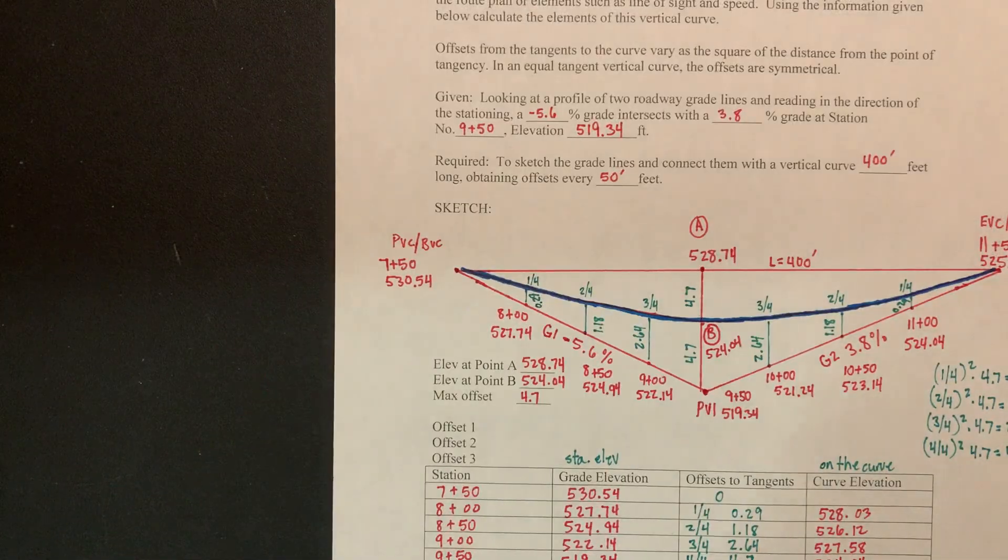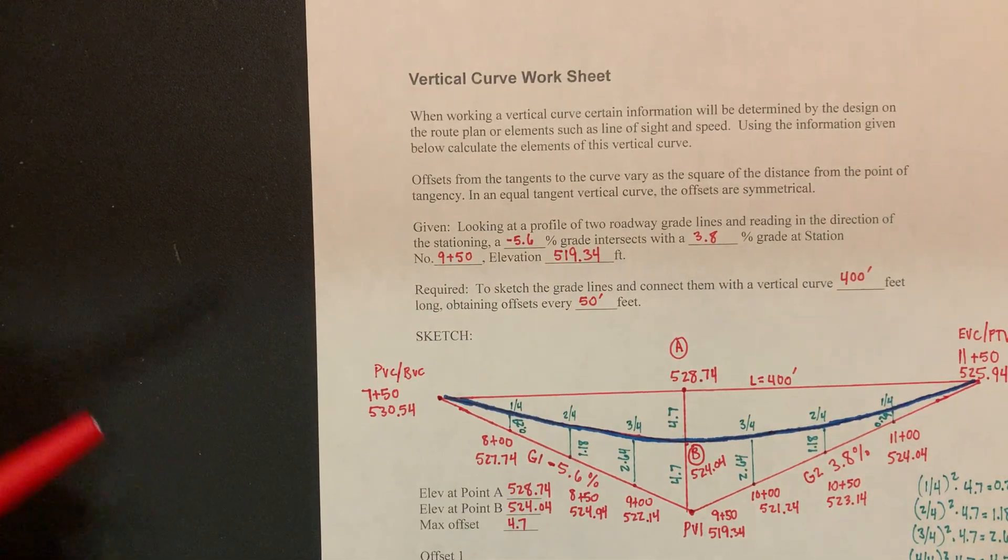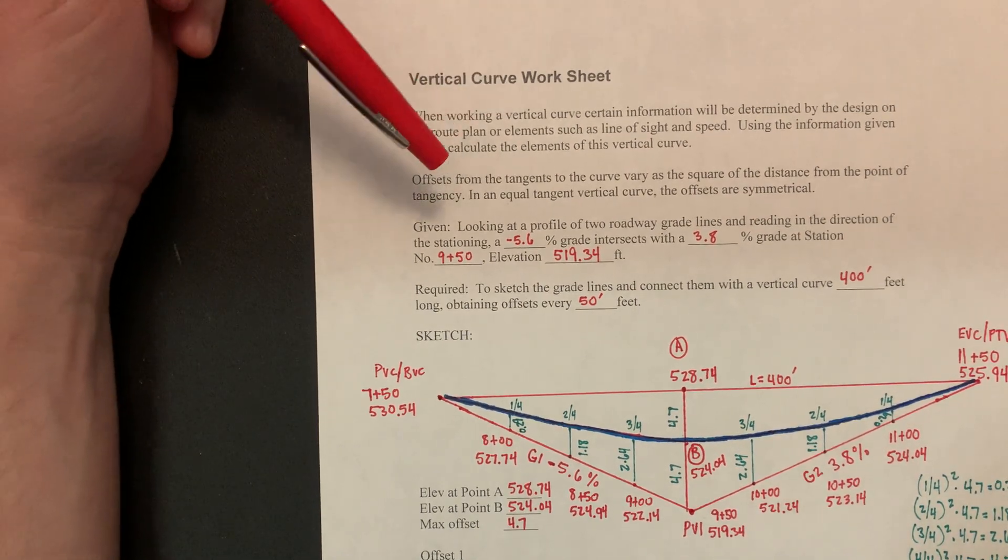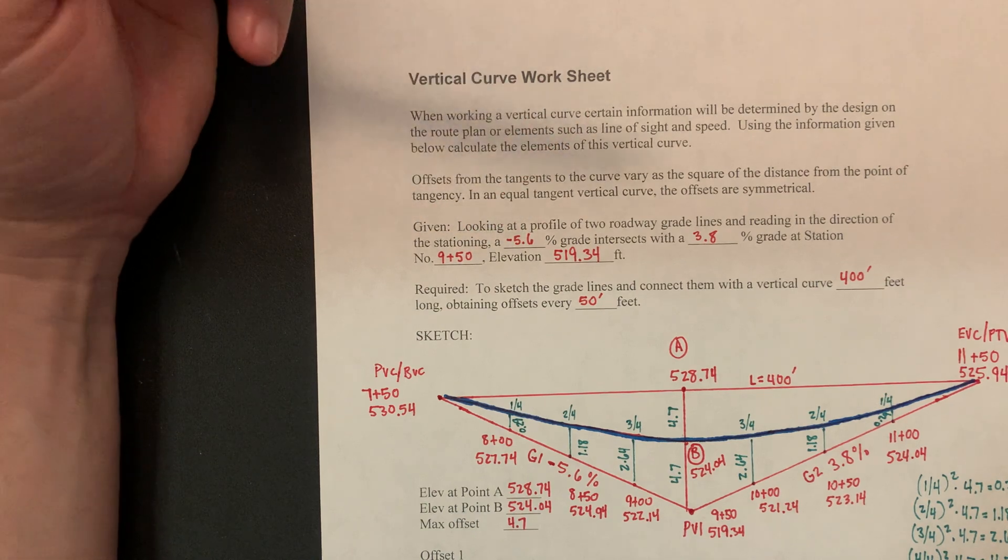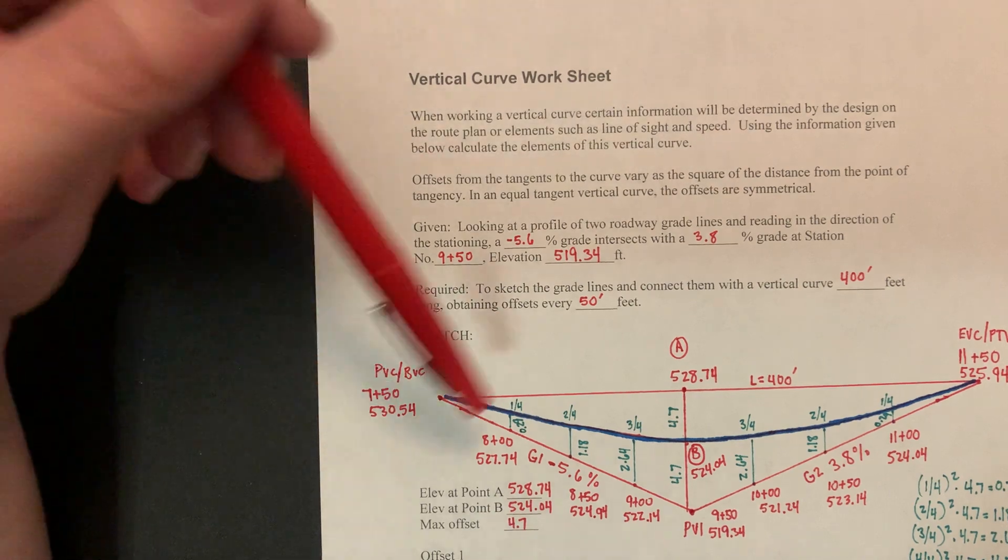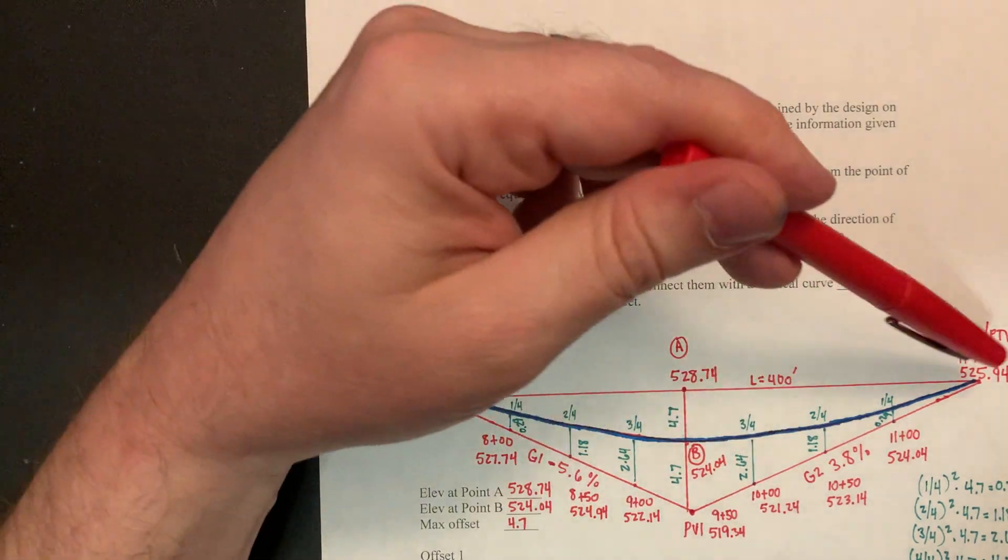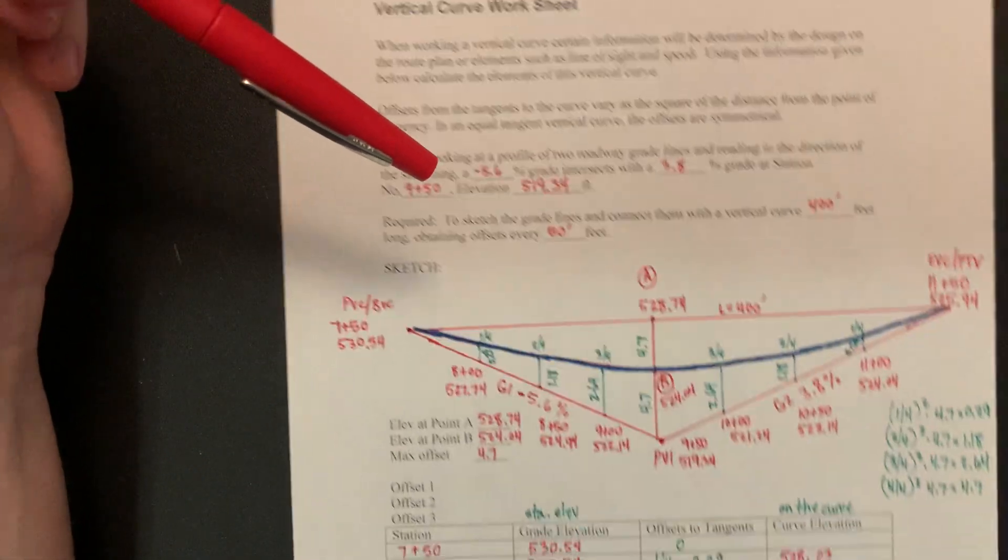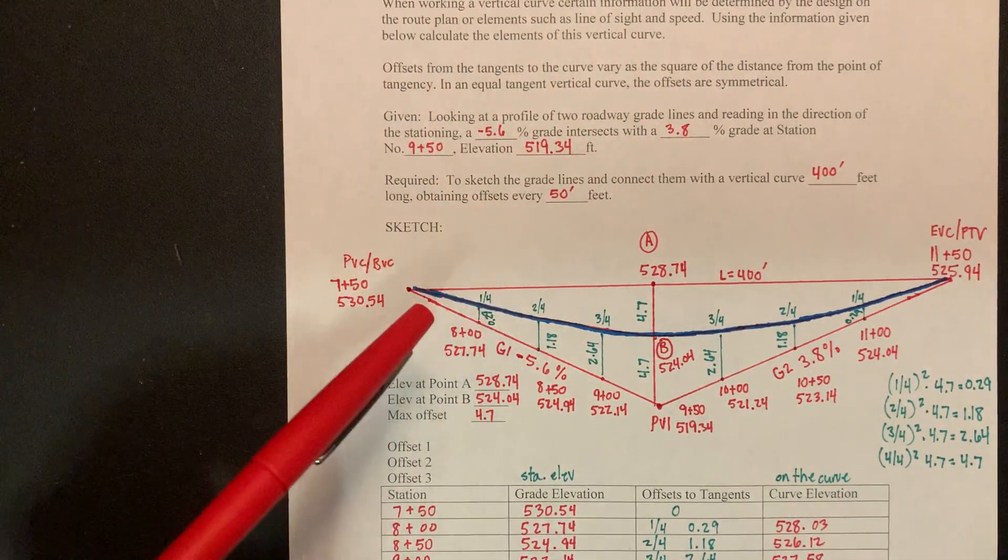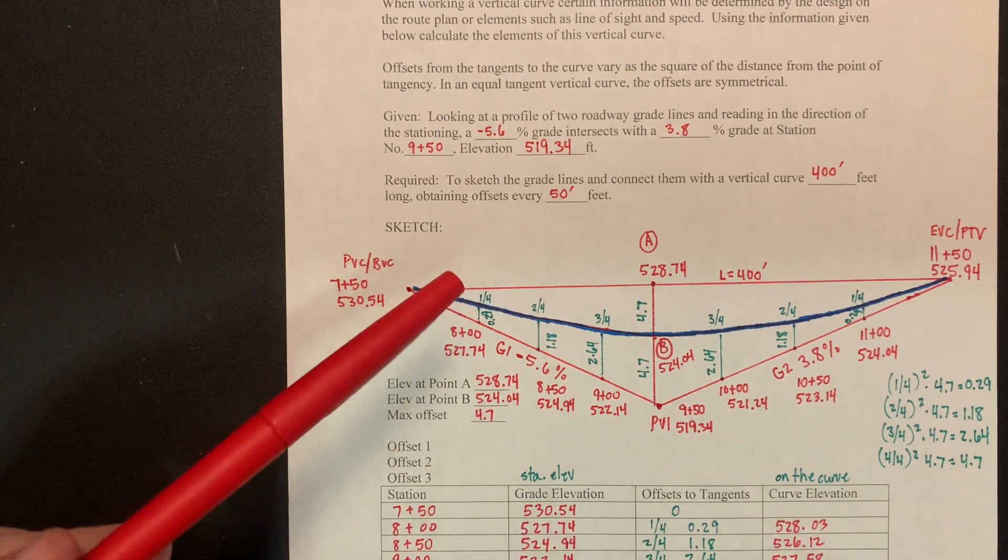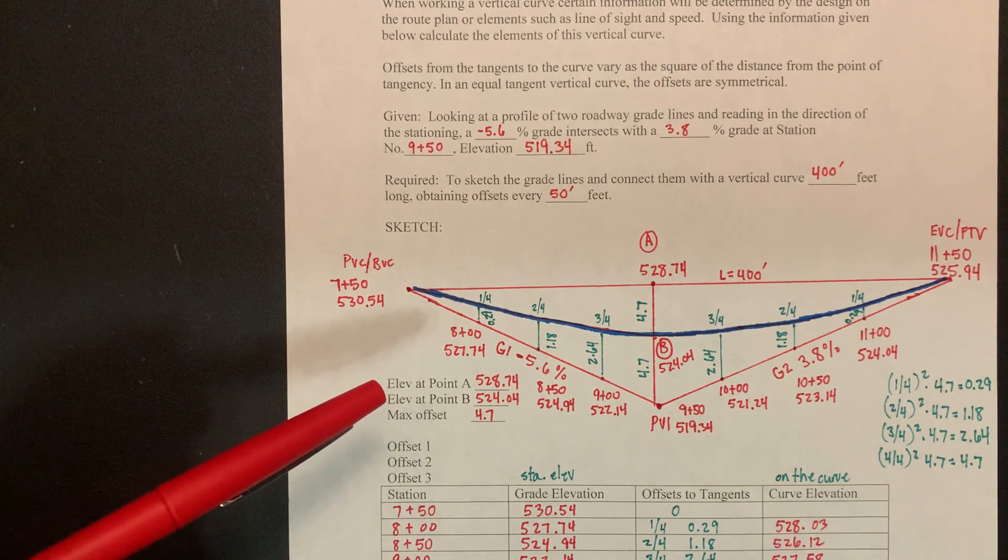So if you were given a vertical curve and they give you a negative 5.6 grade and a positive 3.8, you would be going down negative 5.6 and up 3.8. So this would be a sag curve. So when I usually draw these and I start out with these, I usually draw this little triangle right here, cause this is a symmetrical vertical curve. And the thing to kind of know is they do have an unsymmetrical vertical curve, but they take probably 20 minutes to work out.